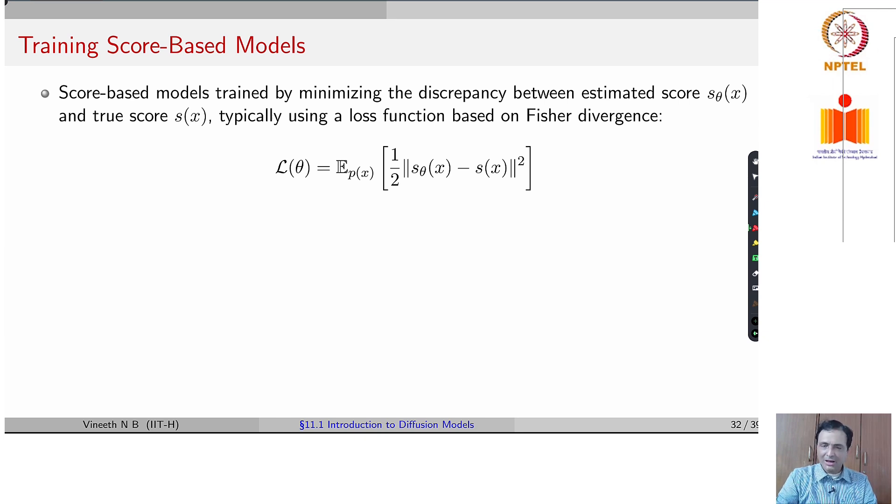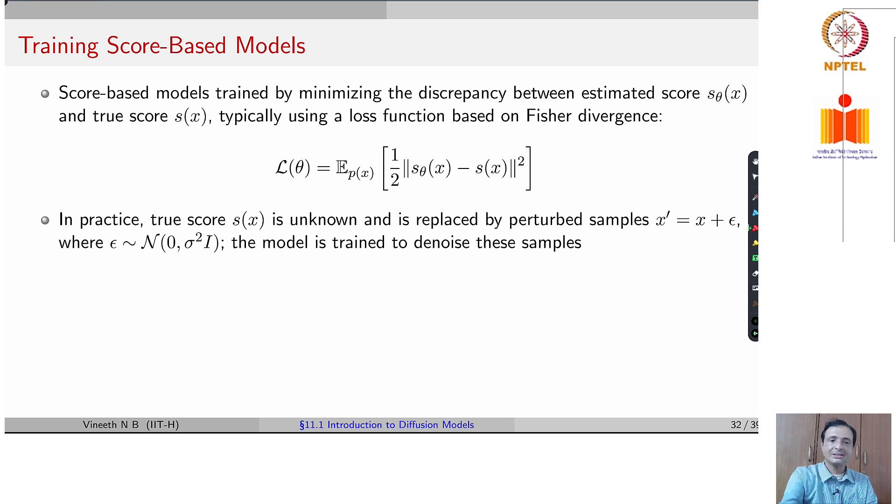While GANs are not scoring functions, you could consider score based generative models in a similar spirit, which do not explicitly model the density of your original distribution. Now, we will come to how this is connected to diffusion models in a while. But before we go there, score based models are typically trained by minimizing the discrepancy between the Fisher divergence between these two scoring functions.